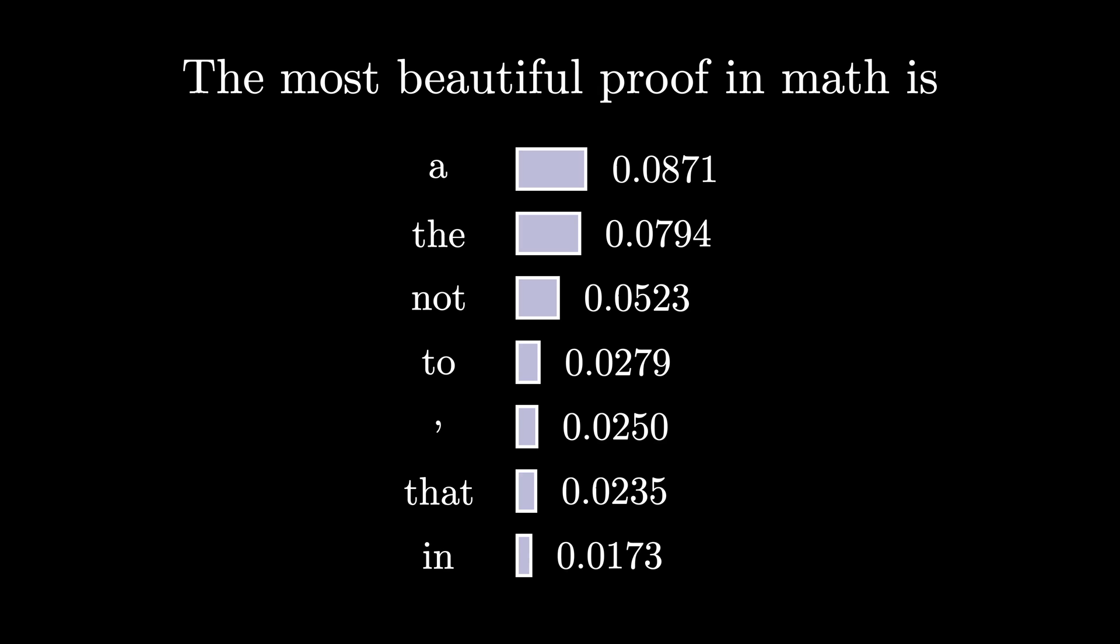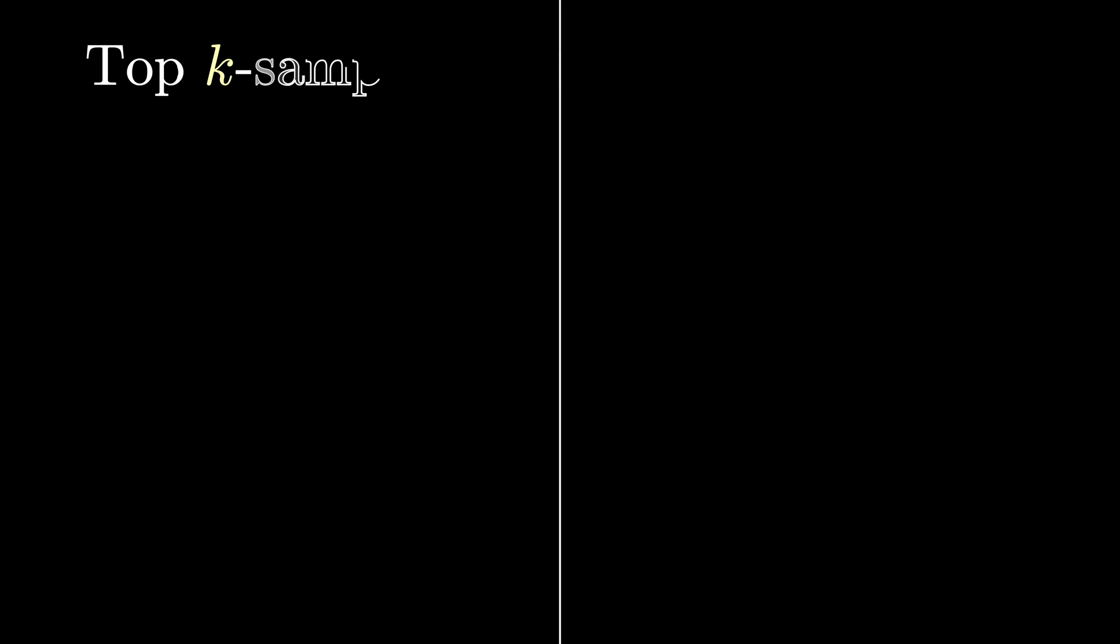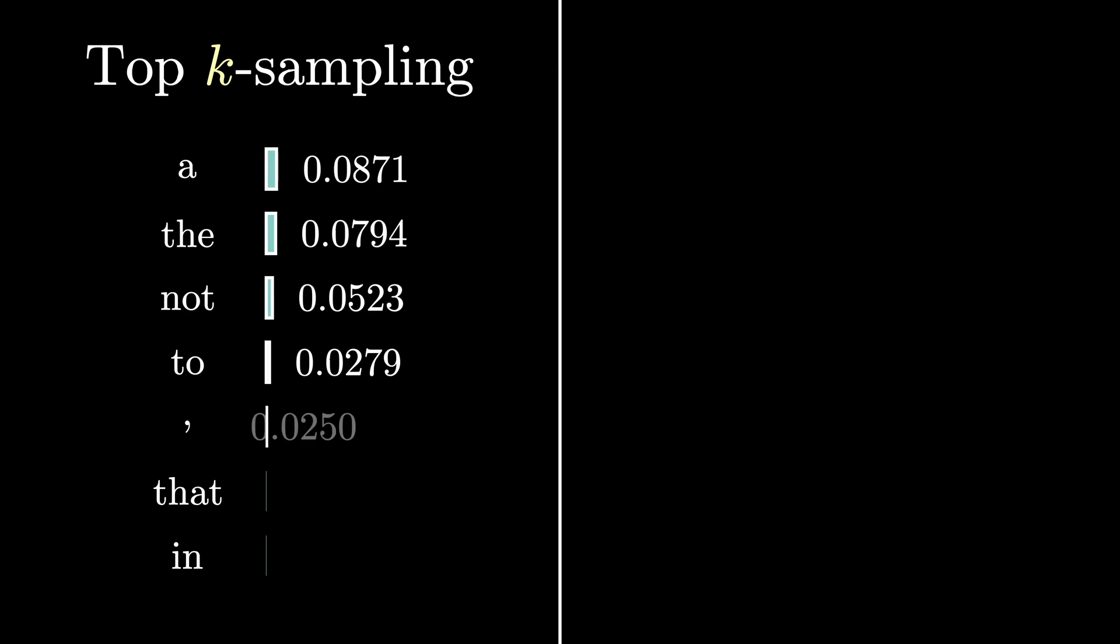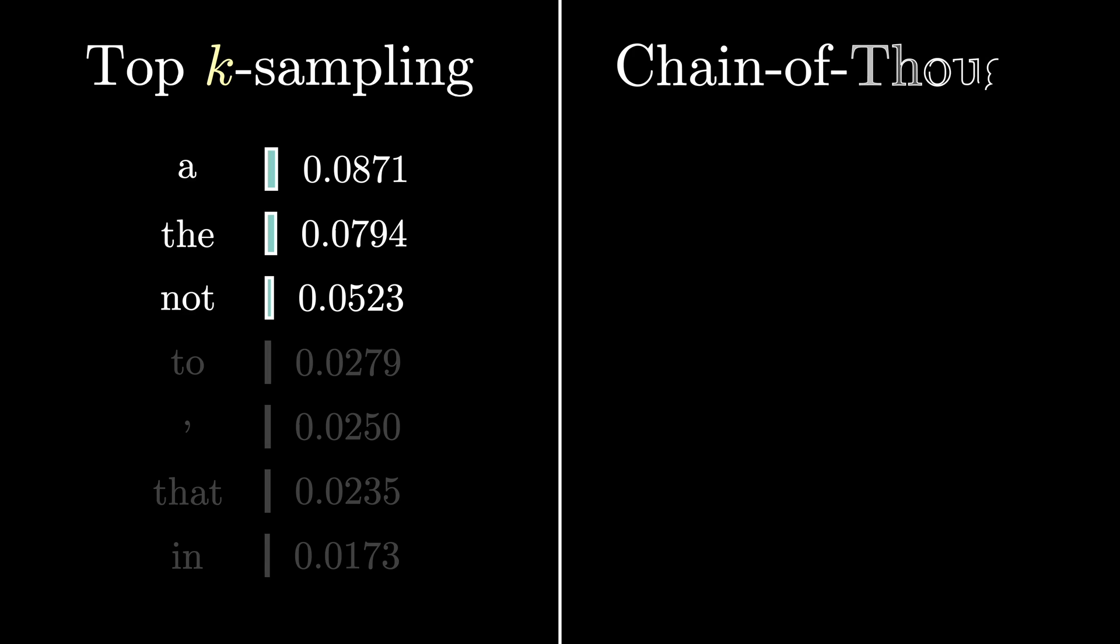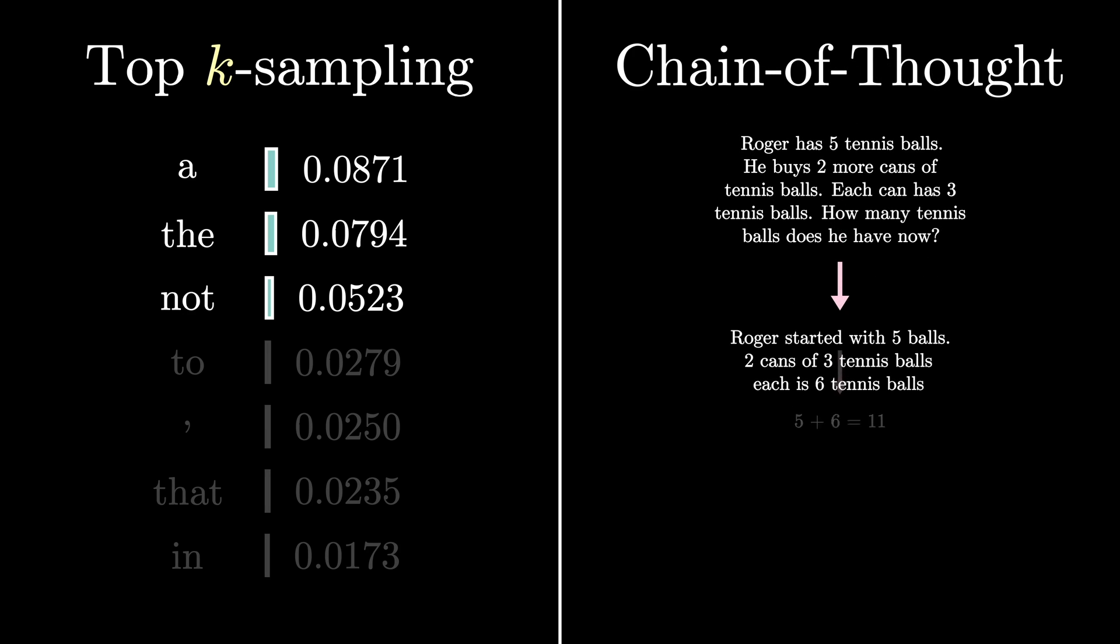There's a whole world of algorithms to figure out how to generate text given a language model, and one of the future videos will be on this. But for instance, I could restrict the words I sample from to just be the top 10. A level above is I could create what's called a chain of thought - a sort of way for the model to reason through its output - but we'll save that for another video.